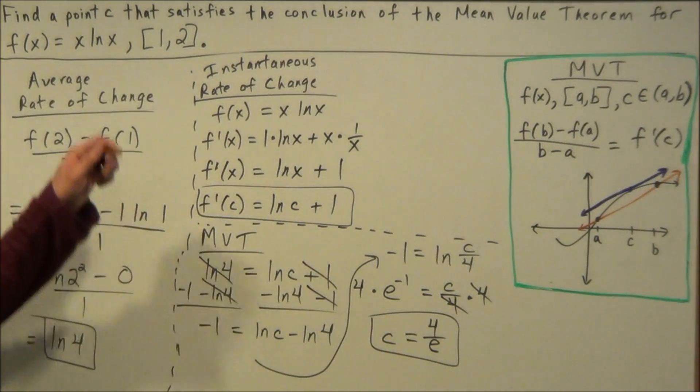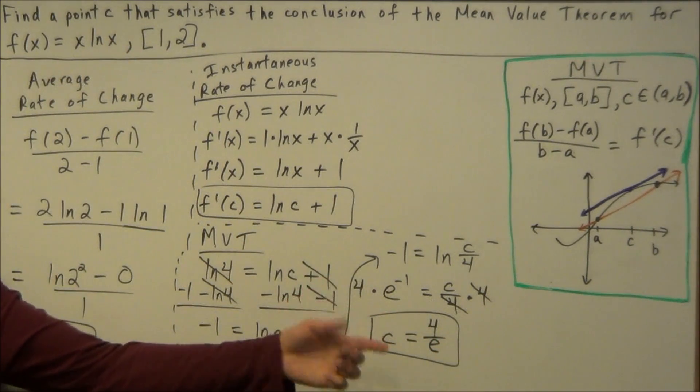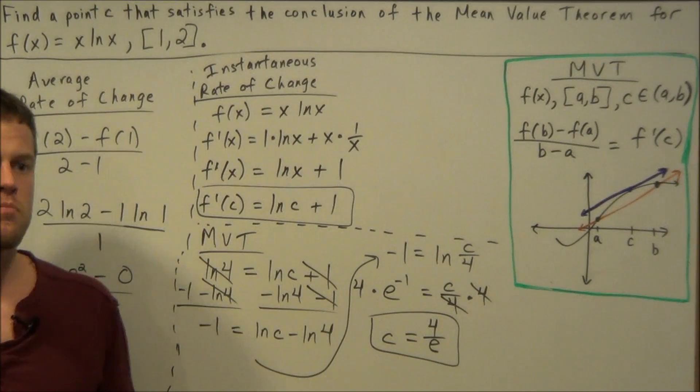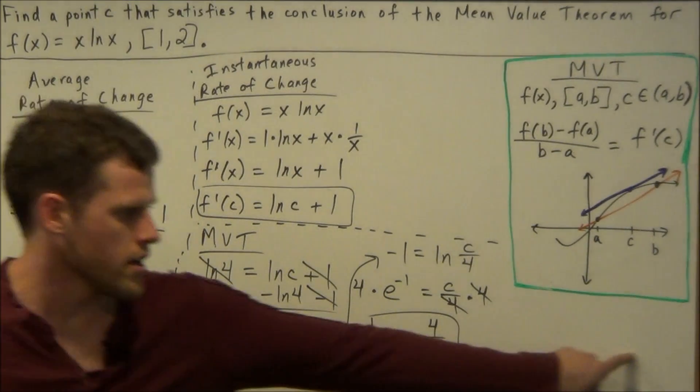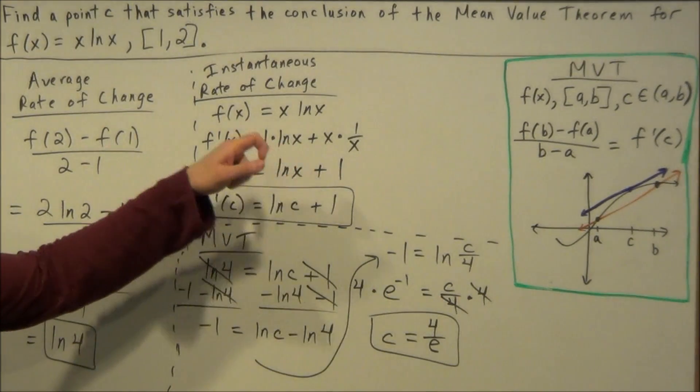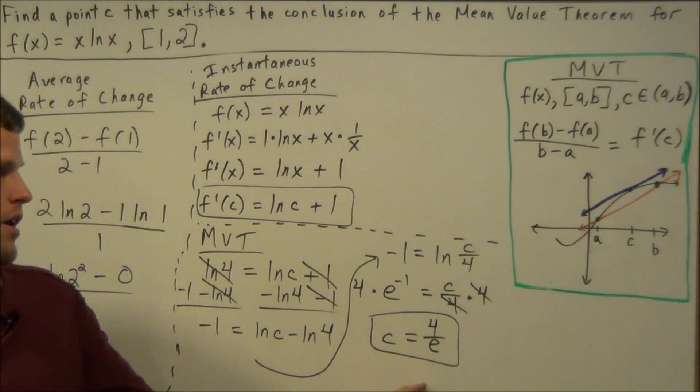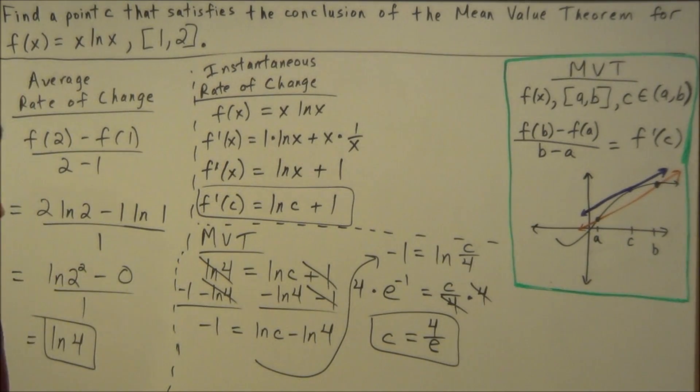So this is our final answer to the problem. Our c value is 4 over e. And if you needed to check, notice e is equal to 2.718, and it just is an infinite string that goes on without a pattern. It's an irrational number. But if we divide it by that quantity, it would throw us between 1 and 2. So this is extra confirmation that our answer is good here.